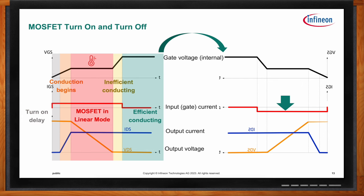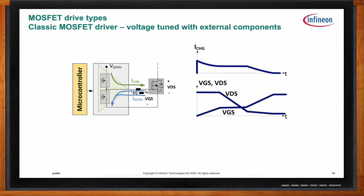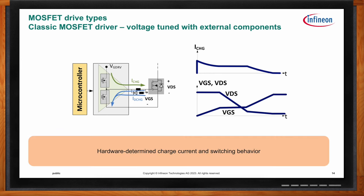There are different methods to drive MOSFET control gates. One of the most primitive is voltage-controlled: you basically switch the battery voltage to the gate. To control how fast the capacitors charge, you manage this with external components — resistors, diodes — to control the current going into or out of the device. This involves a lot of trial and error in tuning. And once you fix those components, there's no further adaptation of the switching times. You're locked into the hardware — it's entirely hardware-determined charge current and switching behavior.